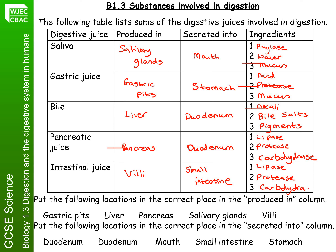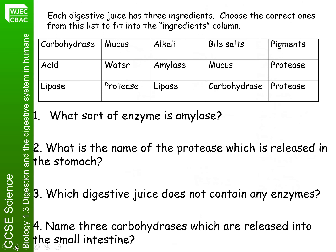You can make sure that your booklet now matches what you can see on the screen. You were then asked to answer four questions. What sort of enzyme is amylase? It is a carbohydrase because it's breaking down a carbohydrate. What is the name of the protease which is released in the stomach? You may need to have looked this one up — it's called pepsin.